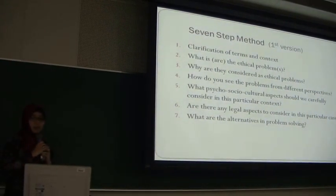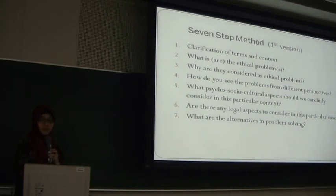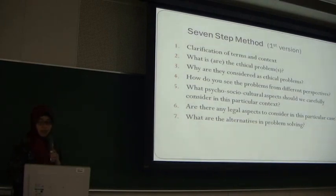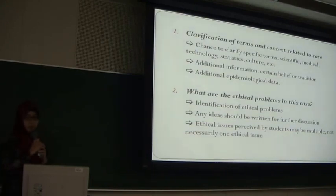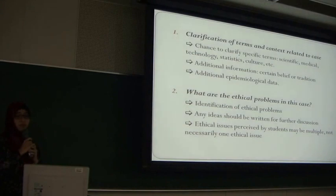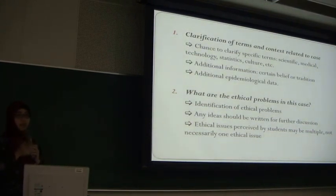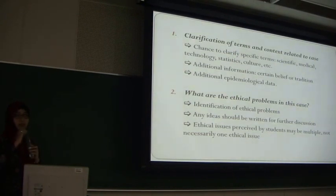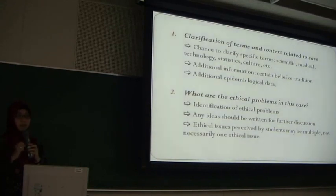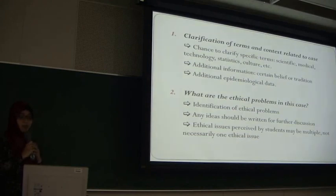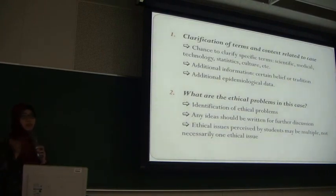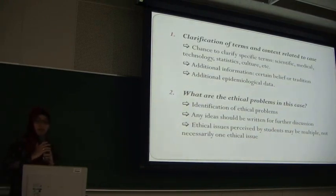The first step, similar to the seven-jump method, is clarification of terms and context — a chance for students to clarify specific terms from the case, which might be some scientific or medical terms, and also to add some information related to the scenario or the case. The second step is that students need to identify what ethical problems they perceive in that case. This can be many — they should write all the ideas they come up with. It's a kind of brainstorming, so students can come up with maybe six or eight ethical problems, but they should write them all down.